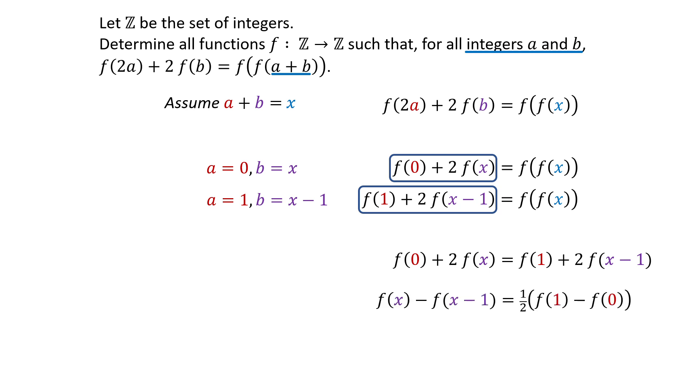Rearrange the equation to get F of X minus F of X minus 1 equals half times F of 1 minus F of 0. Since X is an integer, X minus 1 and X are consecutive numbers. The right side of the equation is constant, so we can conclude that function F must be a linear function.